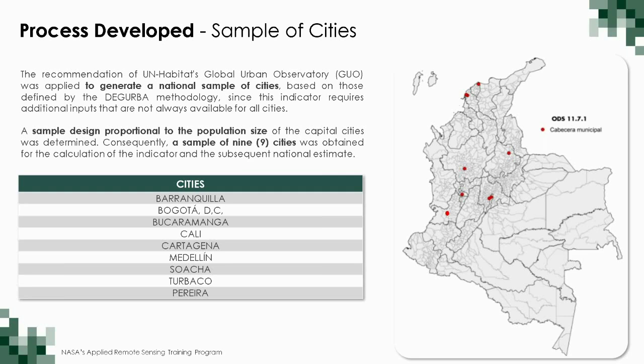In this table you can see the nine cities of the sample, and in the map you can see their location, mainly in urban areas of the country — the central area and the north of the country. The indicator was calculated for these nine cities.